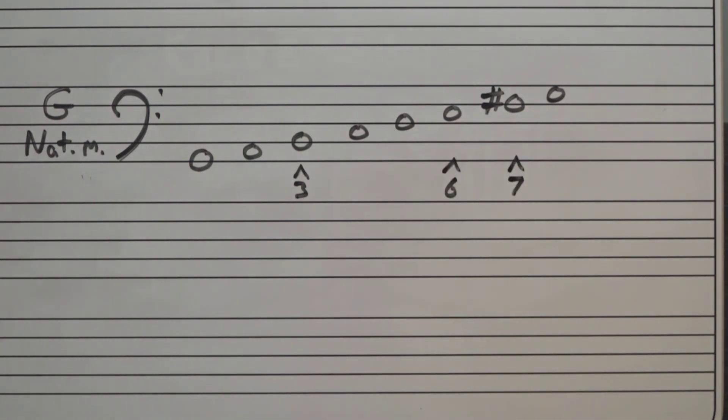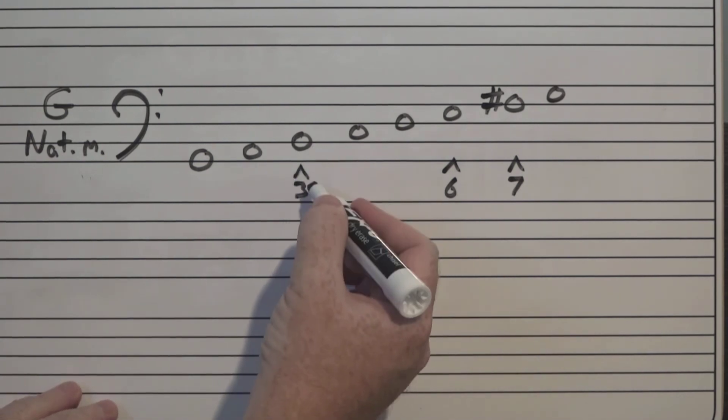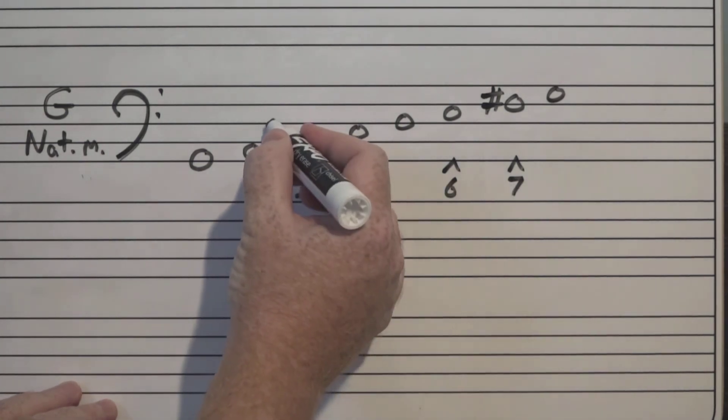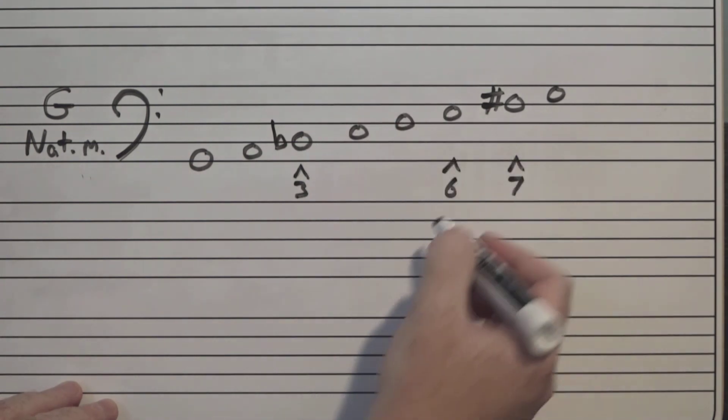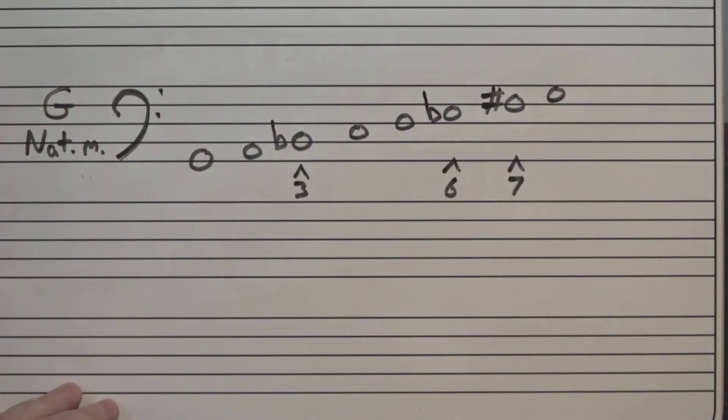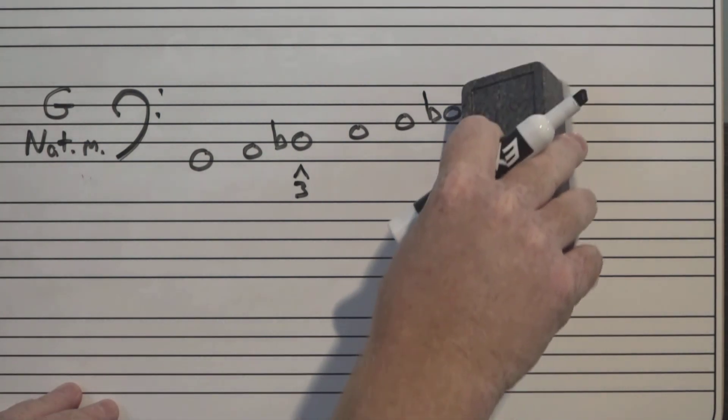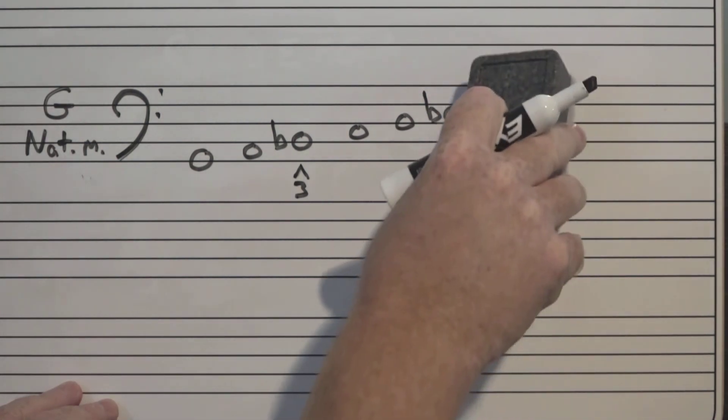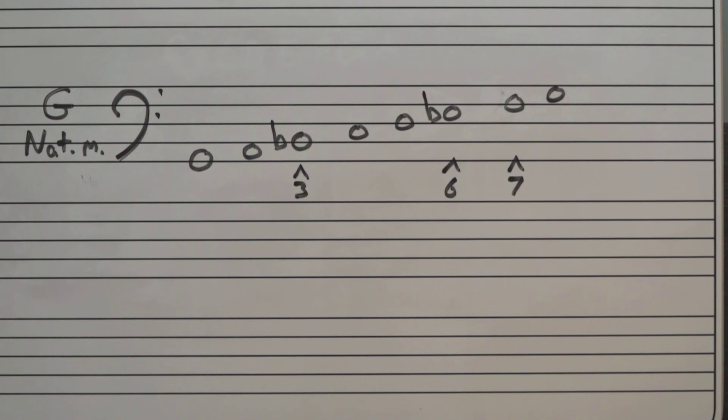The interesting thing is the G major scale is a sharp scale, we have just one sharp, but look what happens when we change it to a G natural minor scale. We have to lower scale degree three, so a B becomes a B flat, lower six, so E becomes an E flat, and lower seven and take away that sharp. So G natural minor scale is actually a flat scale.